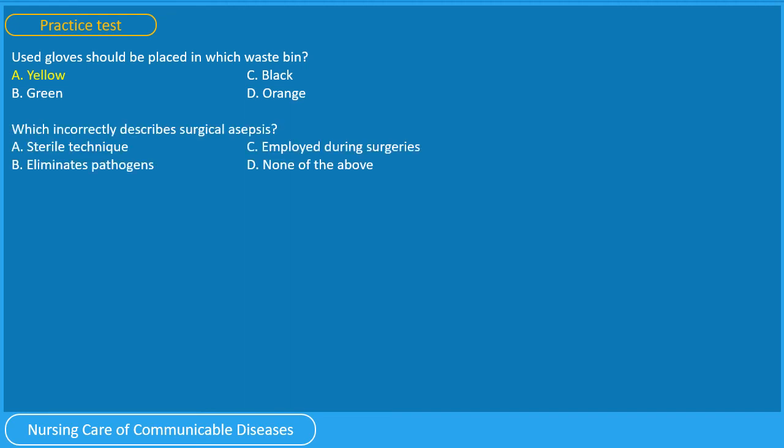Question 2: Which incorrectly describes surgical asepsis? A. Sterile technique, B. Eliminates pathogens, C. Employed during surgeries, D. None of the above. You have 5 seconds. Since surgical asepsis is a sterile technique, it eliminates not only pathogens but all microorganisms. So the correct answer is B. Eliminates pathogens.